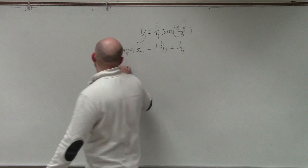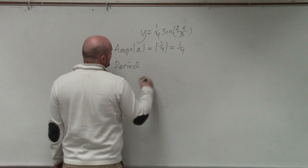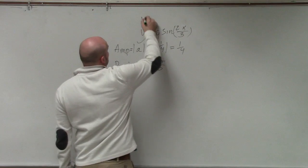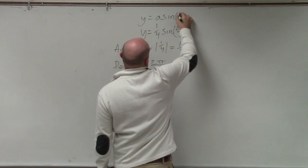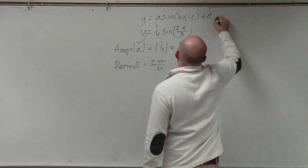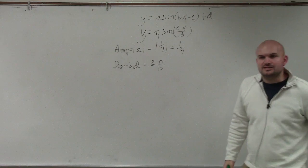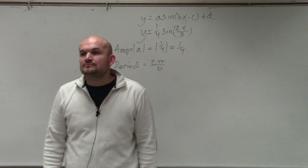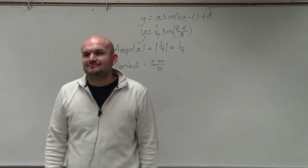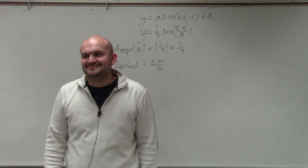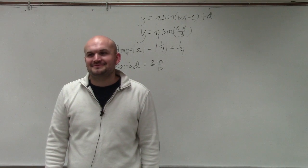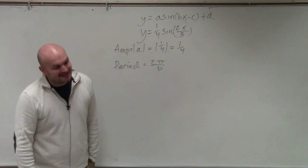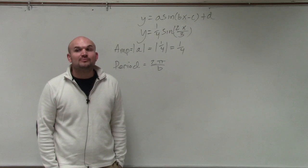The period is going to be 2π divided by b. Now, this one can bring in some problems because we need to remember, first of all, where is b? And how does b relate in this problem? b is the coefficient of our input value. So what we need to do is identify the coefficient of our input value, OK?